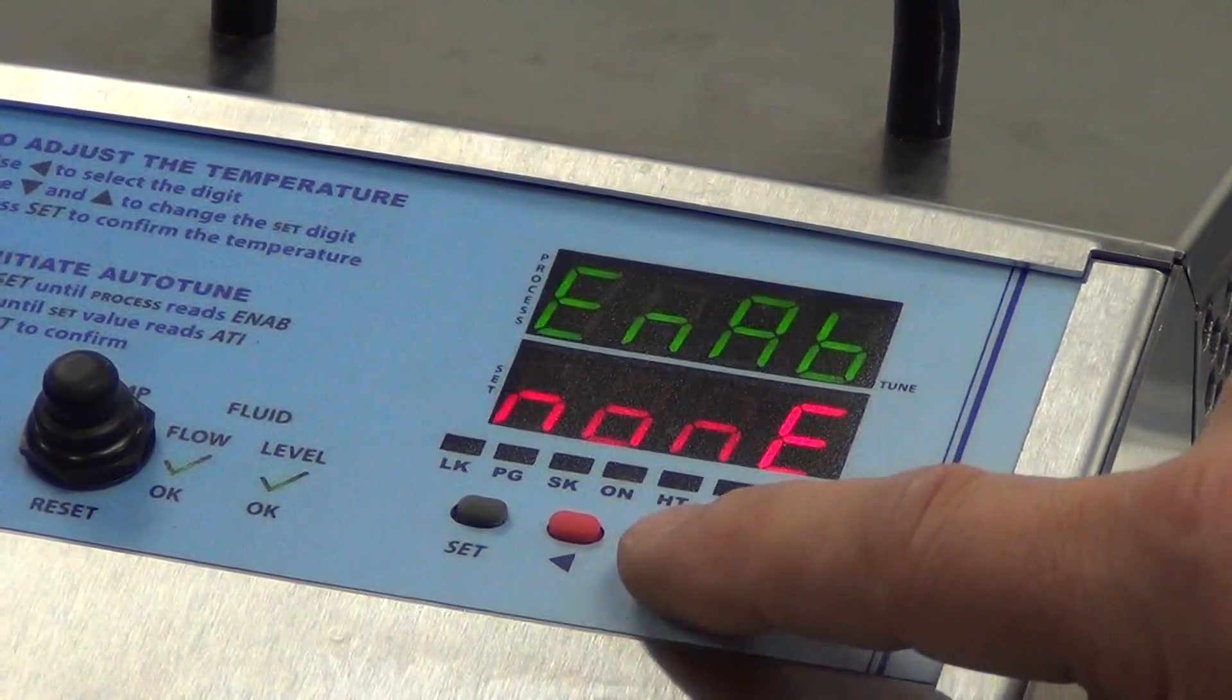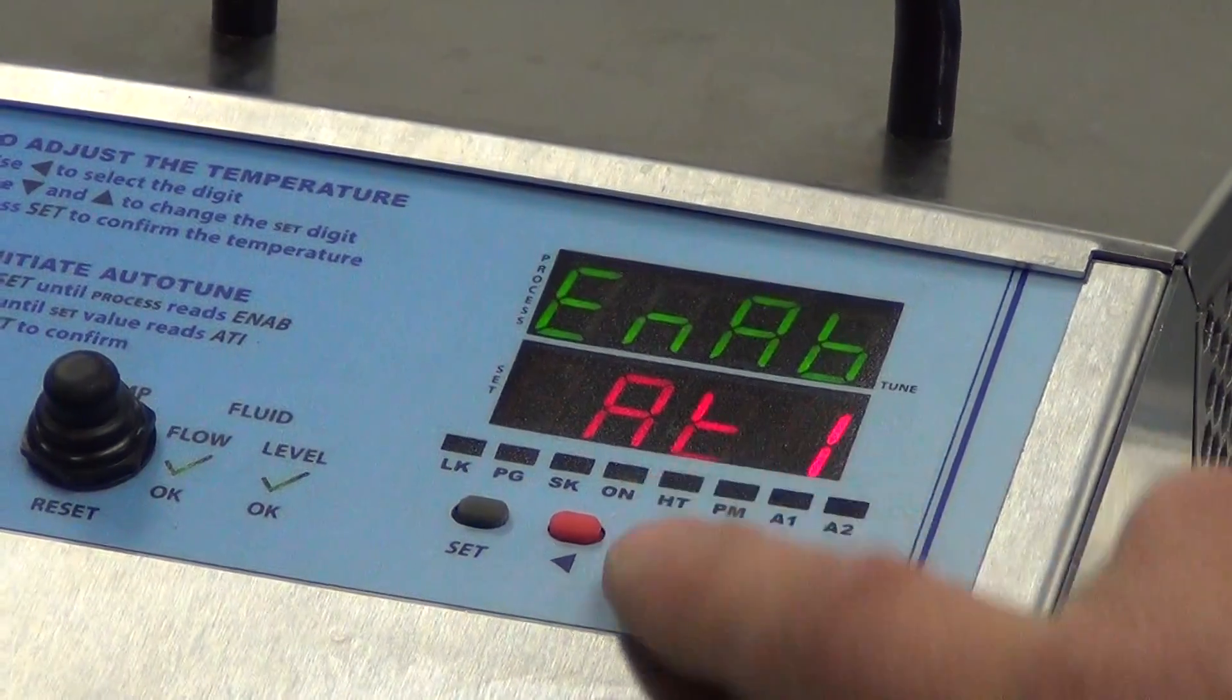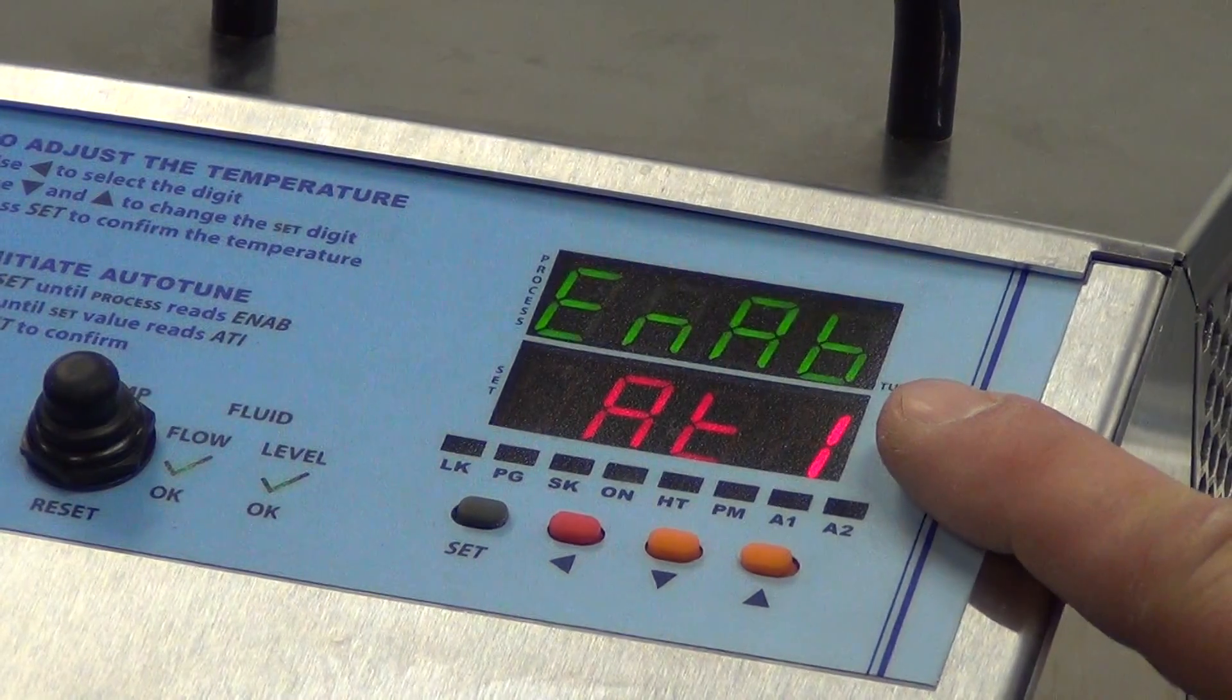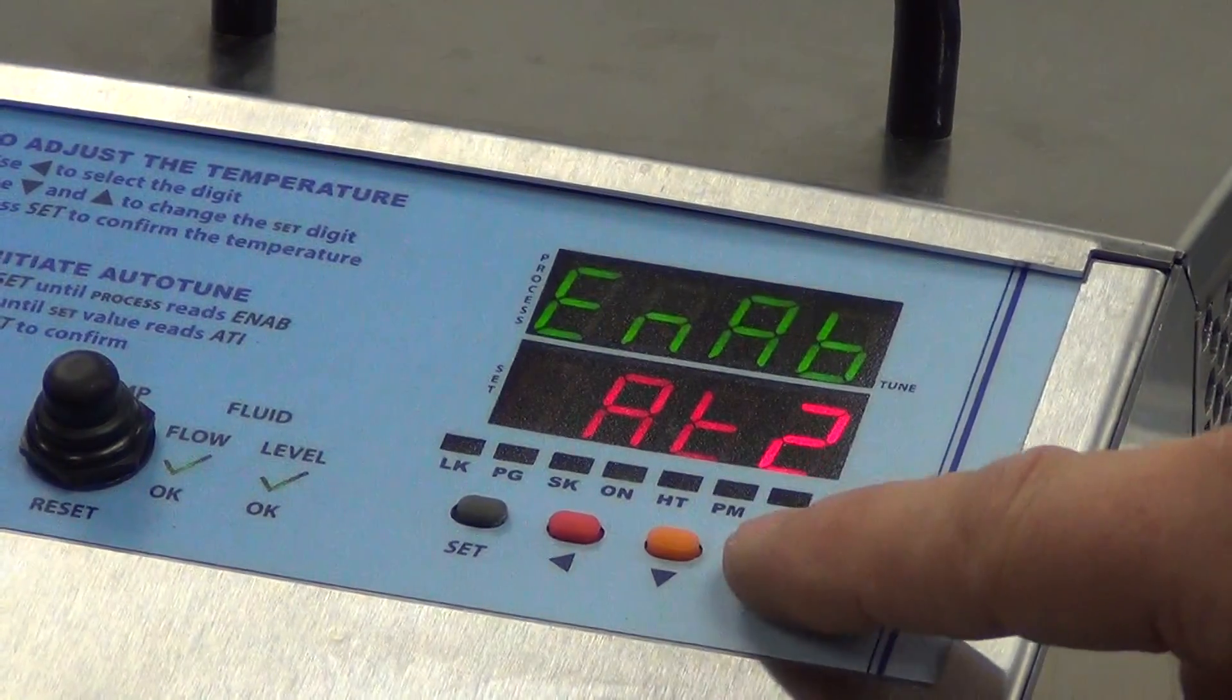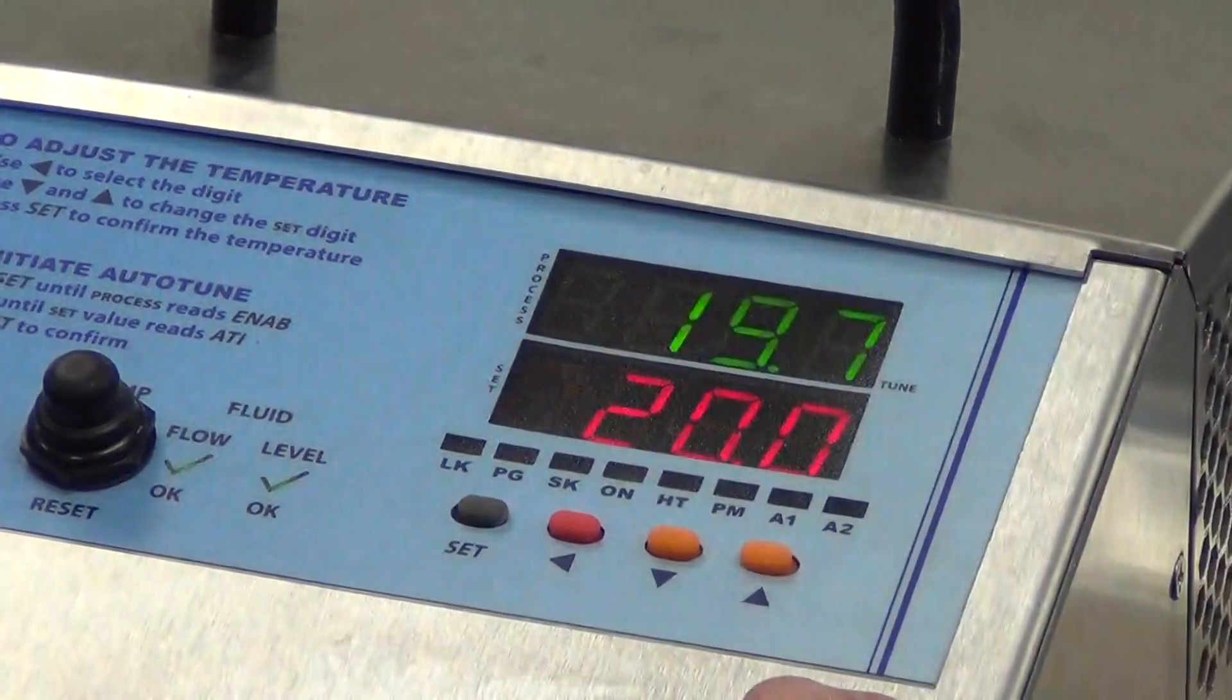Here you are, enable none, which is on. Go down to hand AT1 and AT2 is your auto-tune to set point. We won't do that now. We'll go back up to enable none or on and press set.